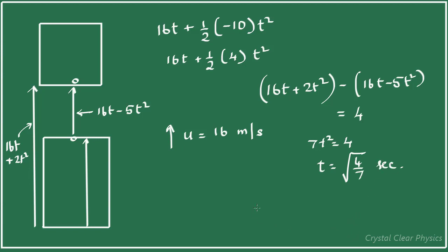I have solved this problem in the ground frame of reference — from the point of view of someone standing on the ground. This person sees the elevator moving up, accelerating upwards. In this person's frame of reference, the bulb falls with an acceleration due to gravity and has an initial velocity of 16 meters per second. This is how we solve the problem in the ground frame of reference.